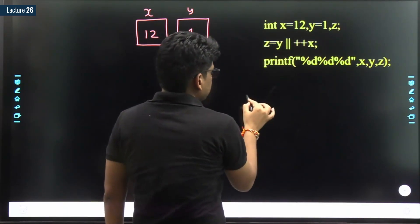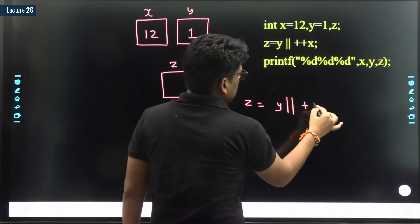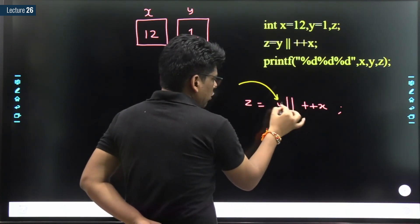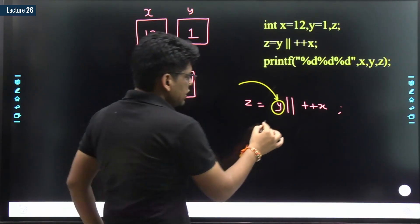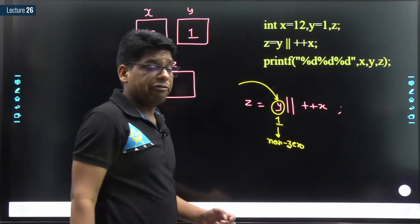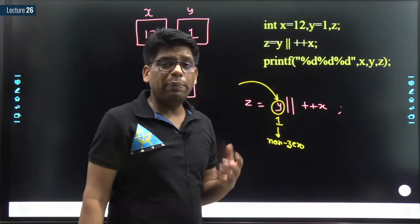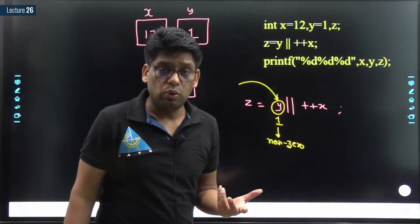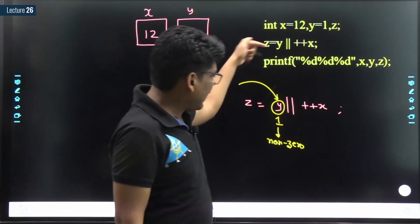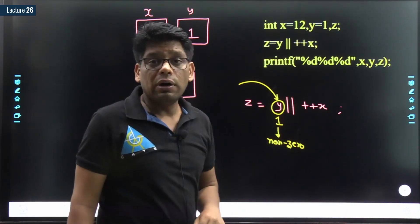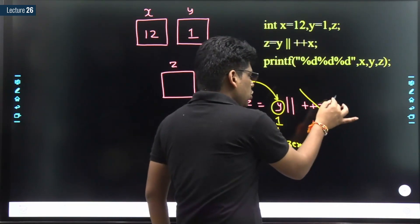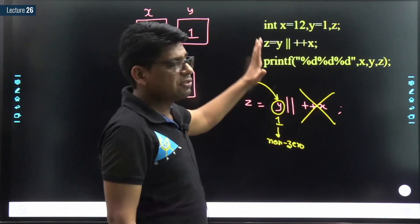We need to solve: z = y || ++x. The compiler will first go to the first operand of OR, which is y. The value of y is 1, which is non-zero. The OR operator says if any operand is non-zero, the result will be true — that means the output will be 1. So if the first operand is non-zero, will the compiler ever go to the second operand? No. That is the short-circuit property of logical OR. If the first operand is non-zero, the compiler will never evaluate ++x, so the value of x will not be modified.